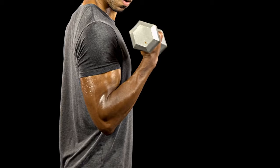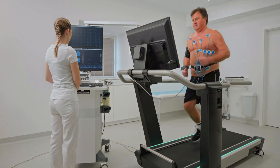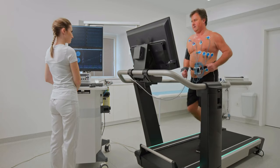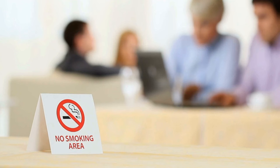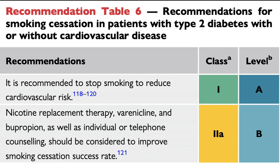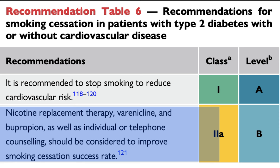Resistance exercise is recommended at least twice weekly. Before starting an exercise program in patients with type 2 diabetes and established cardiovascular disease, a formal exercise stress test should be considered. Smoking cessation results in a 36% reduction in mortality. If advice, encouragement, and motivation are insufficient, then drug therapies should be used early, including nicotine replacement therapies followed by bupropion.